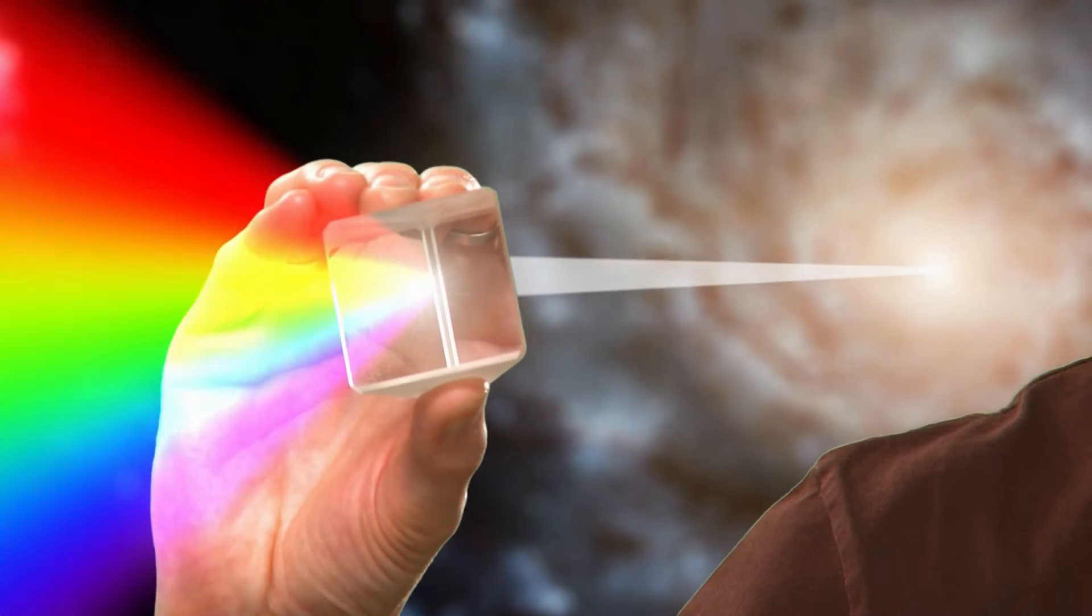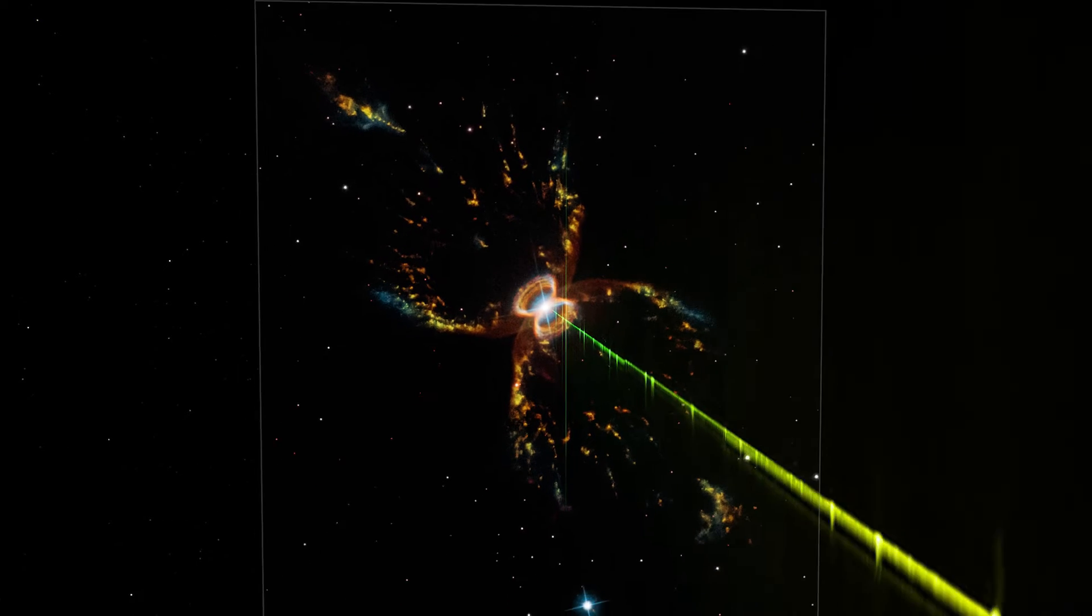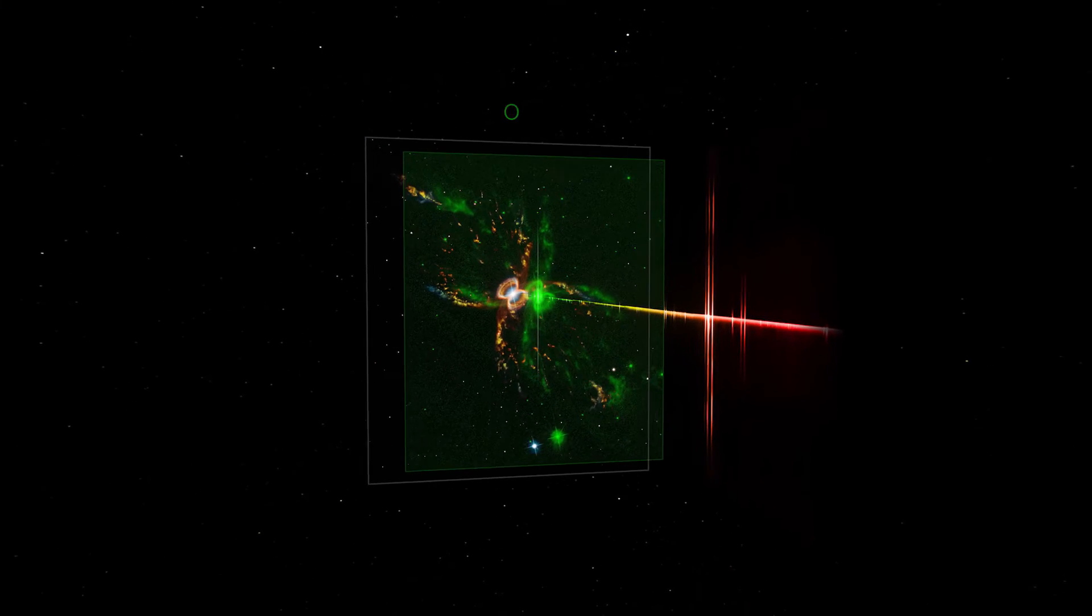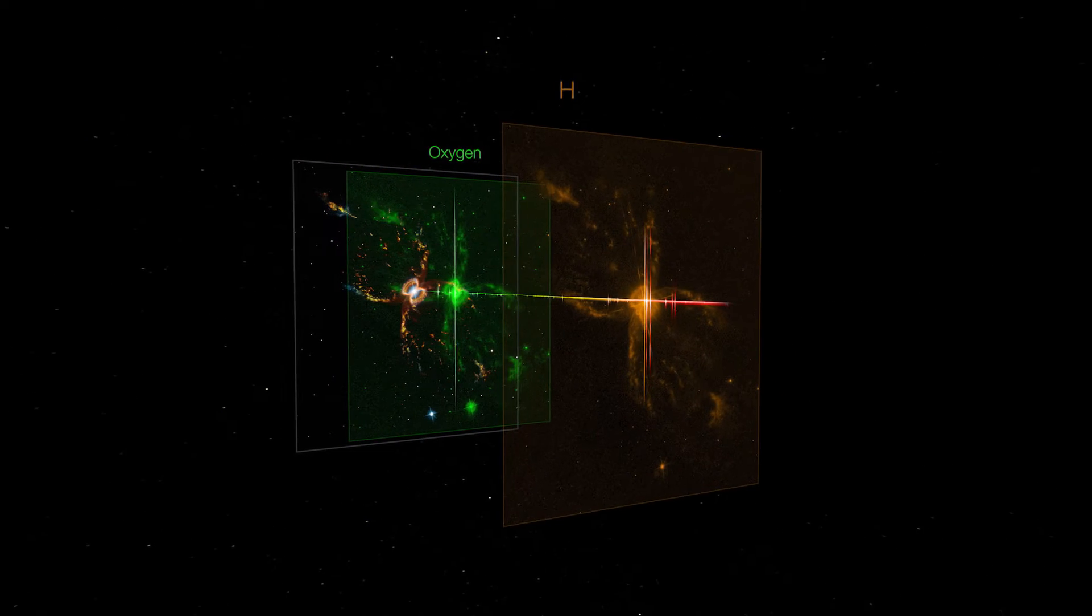This dispersed light is then focused onto a detector, and it is seen as a spectrum. The spectrum's pattern can be analyzed by astronomers to decipher what atoms and molecules are present in the source.